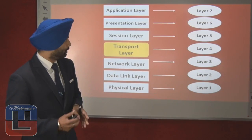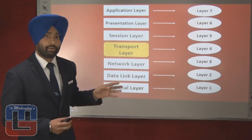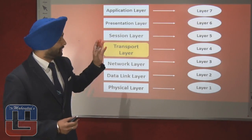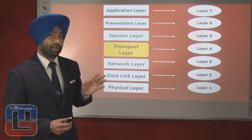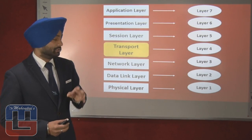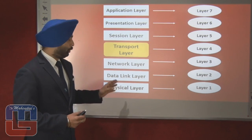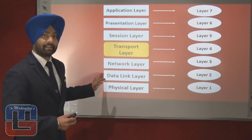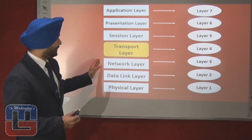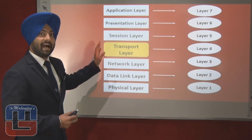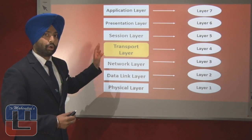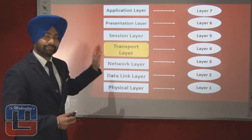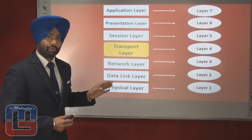Let us have a view of the 7-layer architecture of the OSI model. The very first layer is the physical layer, followed by the data link layer, then after we have the network layer. The topic for today is the transport layer.